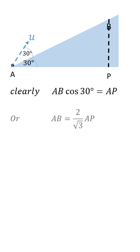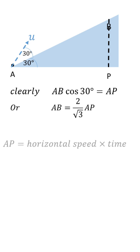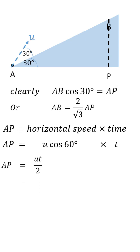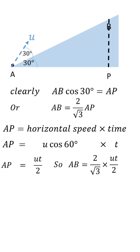So AB is equal to (2/√3)·AP. Now, what will AP be? AP is just the horizontal speed of this projectile multiplied by its time, so AP = u·cos60·t = ut/2. Therefore, AB = (2/√3)·(ut/2).